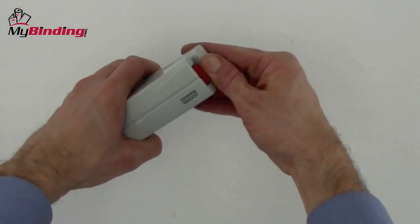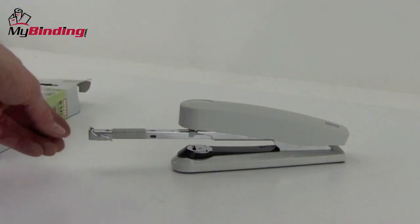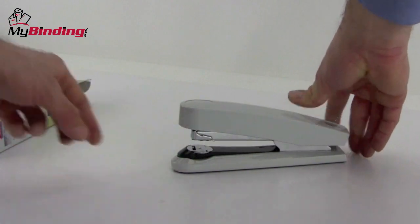Reloading is super simple with the red button on the back, pulls out the carriage, load your staples, slide it back in, and you're on your way.